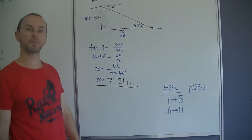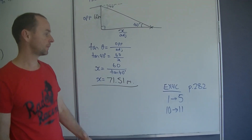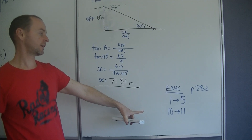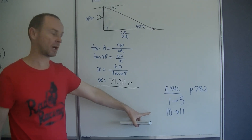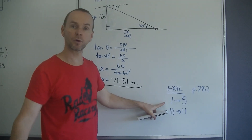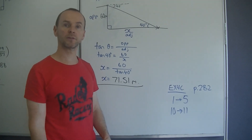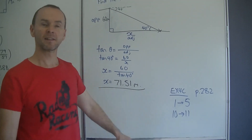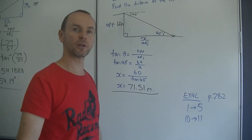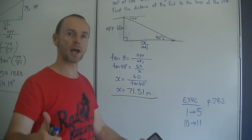And let's have a look at your homework. It says 4C, page 282, questions 1 to 5, and 10 and 11 - tricky ones. Questions 1 to 5 are all worded questions. Don't forget - smash that like button and do your homework. See you soon, kids. Bye.